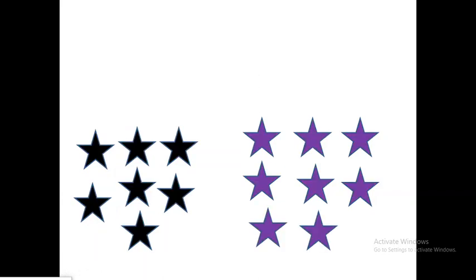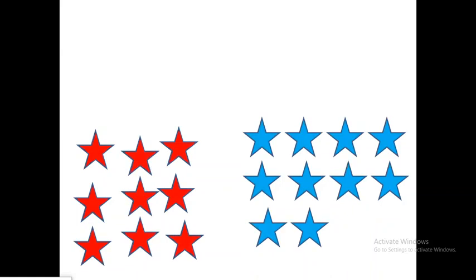Let's count the black stars: one, two, three, four, five, six, seven. We have seven black stars. Now the purple ones: one, two, three, four, five, six, seven, eight. Eight purple stars.